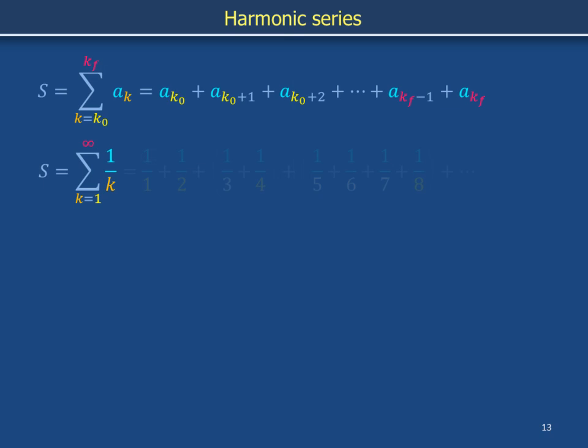S is now the infinite harmonic series, namely the sum from k equals 1 to infinity of 1 over k, which is 1, plus 1 over 2, plus 1 over 3, plus 1 over 4, and so forth.